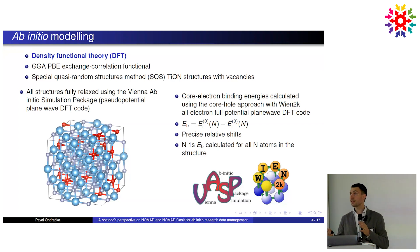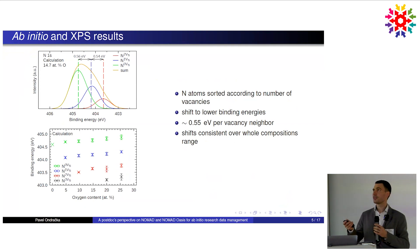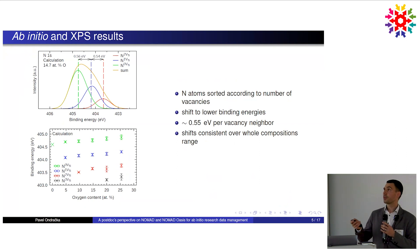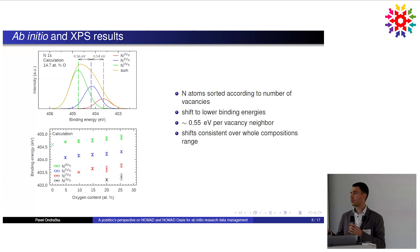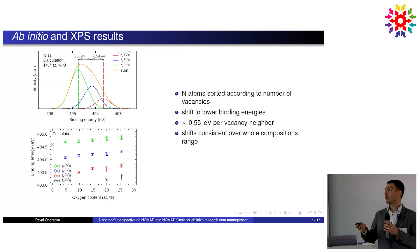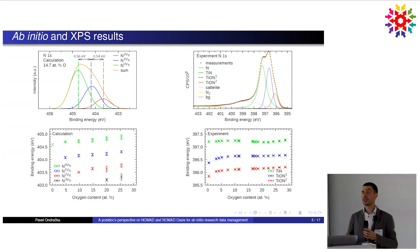When we divided the calculated binding energies according to local environments — nitrogen with six neighbors, five neighbors, and four neighbors — it was immediately clear that there's a significant energy shift of about 0.5 eV per vacancy in the vicinity. This is consistent across the entire composition scale with respect to oxygen content. We also measured XPS spectra on thin films and observed this three-peak structure experimentally; the shifts were essentially exactly what was predicted by the calculations.